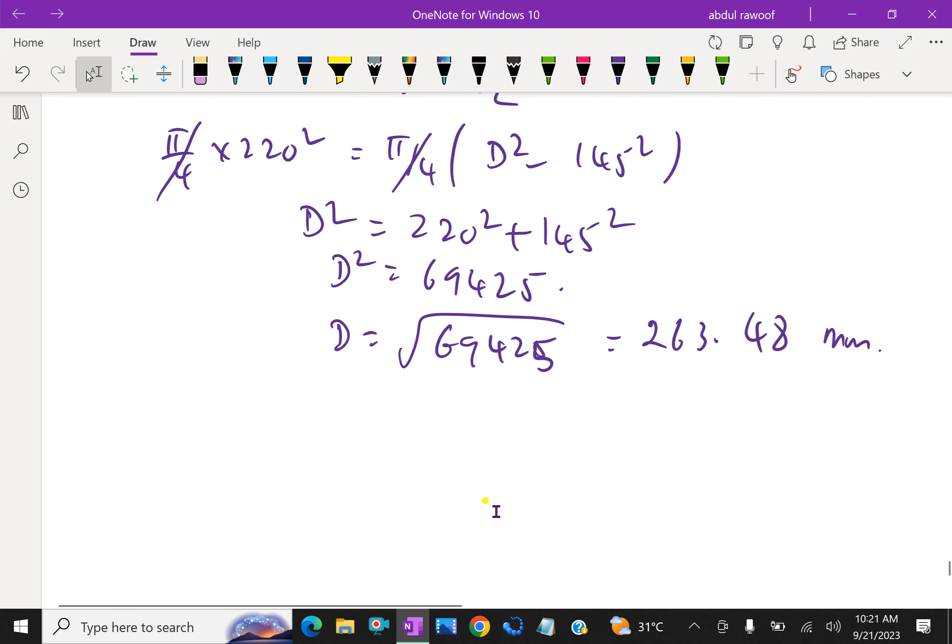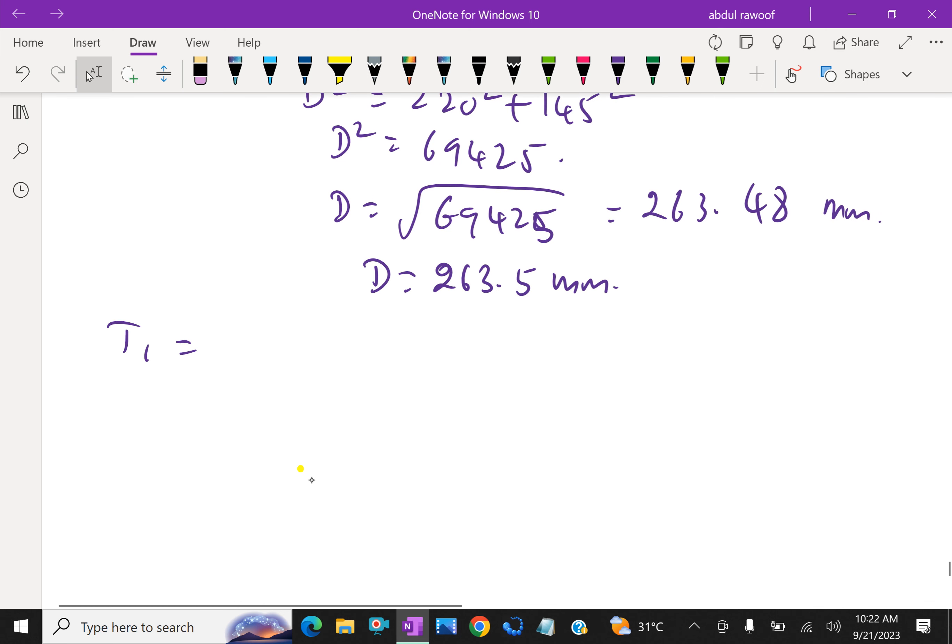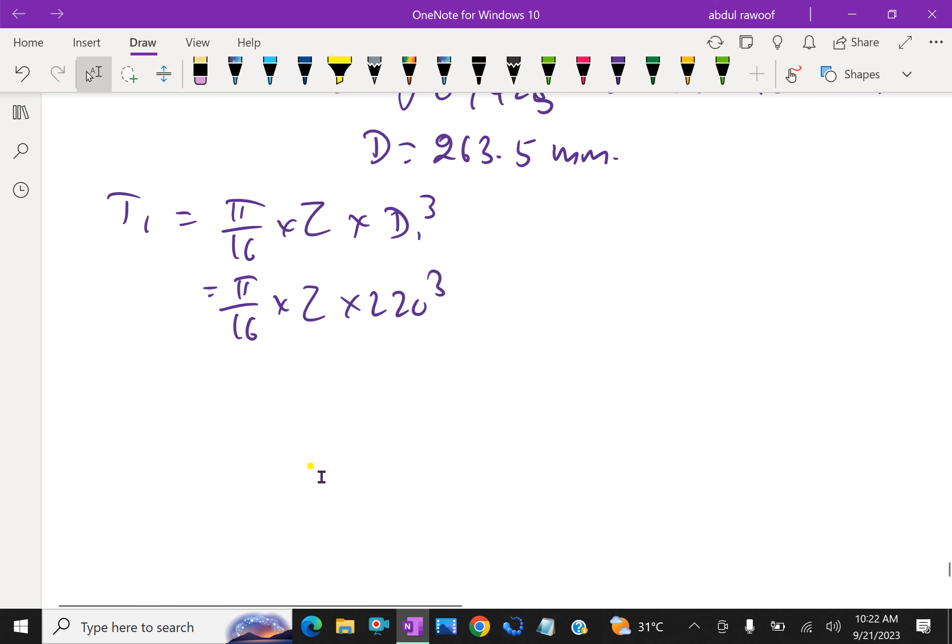For torque T1, torque by solid shaft is π/16 × τ × D³. T1 equals π/16 τ × 220³. We will keep π and τ common, so 220³ over 16 is 665,500 π τ.